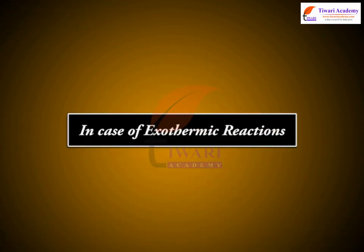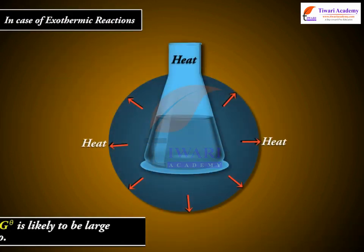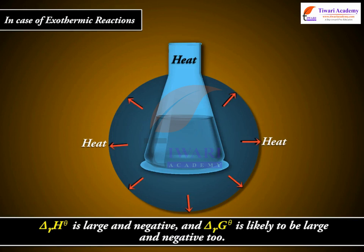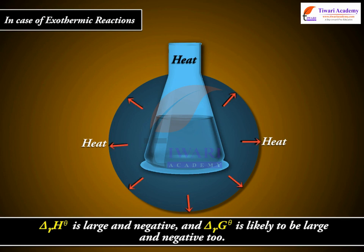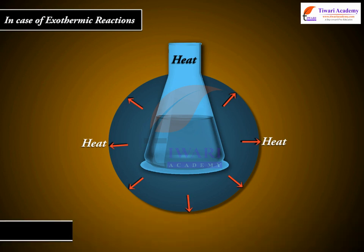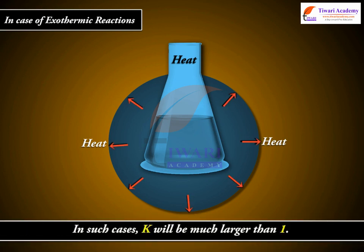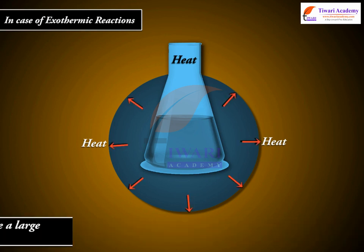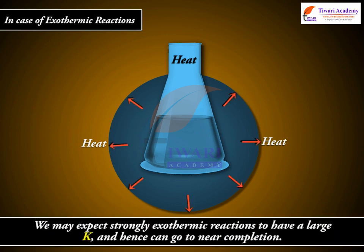In case of exothermic reactions, ΔrGθ is likely to be large and negative, and ΔrHθ is likely to be large and negative too. In such cases, K will be much larger than 1. We may expect strongly exothermic reactions to have a large K and hence can go to near completion.